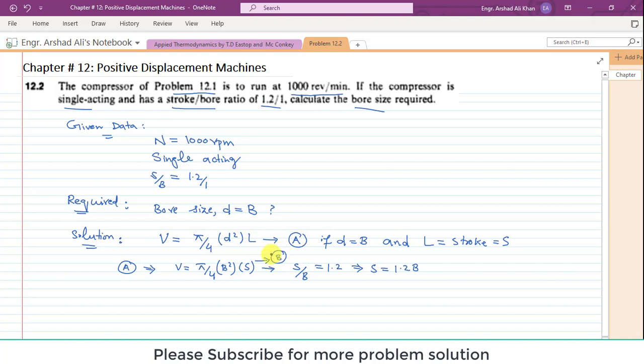Putting S is equal to 1.2 B in expression V, it will become V is equal to pi by 4 into B squared, and S is nothing but 1.2 B. Further we can write V is equal to 1.2 pi by 4 into B cube.